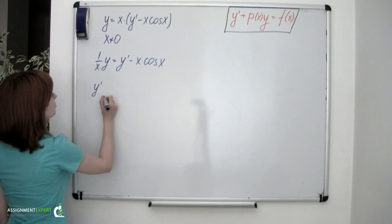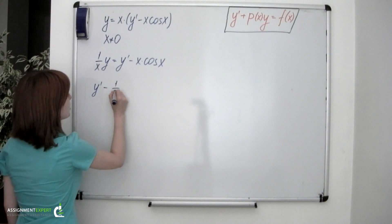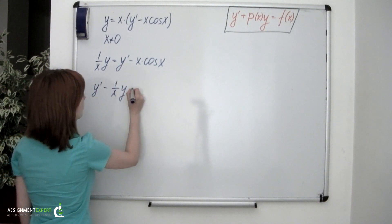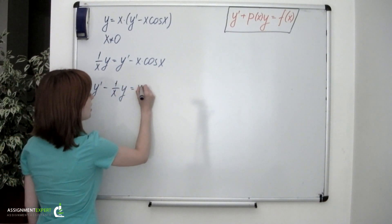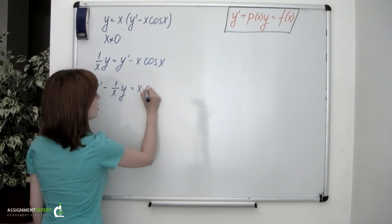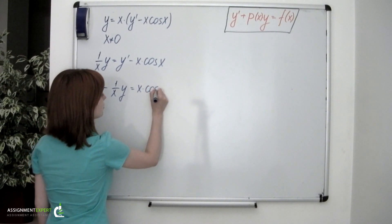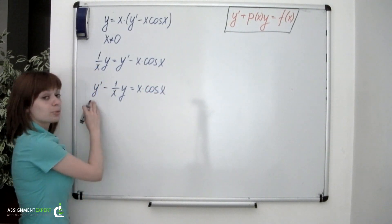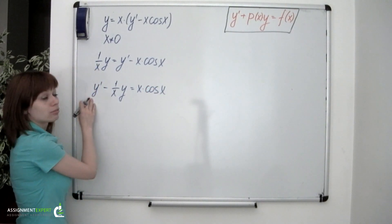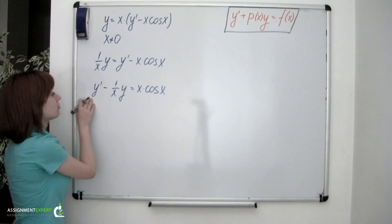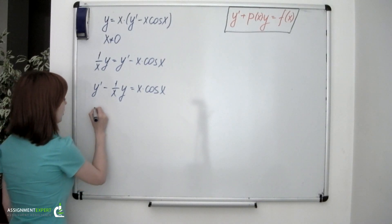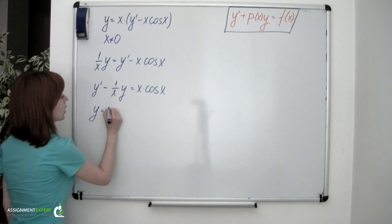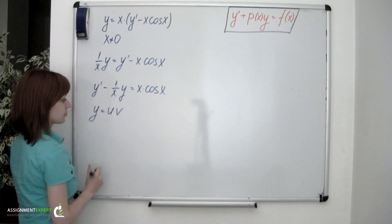y' minus 1 over x times y equals x times cosine of x. Now we have our equation written in the general form and we can make a substitution y equals u times v.